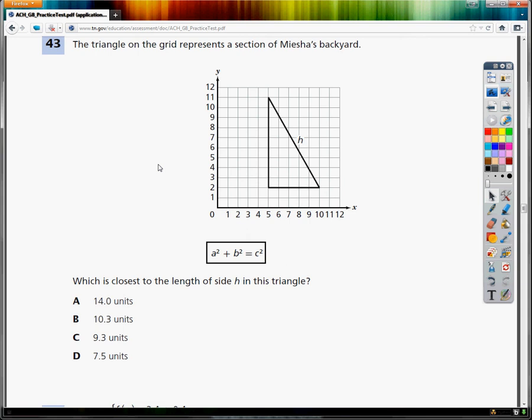This is TCAP practice question number 43. It says the triangle on the grid represents a section of Myesha's backyard. What is the closest to the length of side H in this triangle?